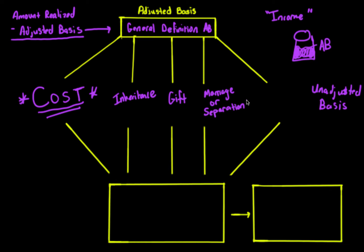The other basis principle we see a lot is fair market value upon a certain date. Keep those in mind: carryover basis and fair market value. Another type of unadjusted basis rule involves non-recognition rules — there will be other videos on those. If you have a non-recognition event, you don't have to recognize gain or loss, and there are corresponding basis rules. There are hundreds of non-recognition rules throughout the Internal Revenue Code, each with their own basis rule. There are also basis rules relating to discharge or cancellation of indebtedness.